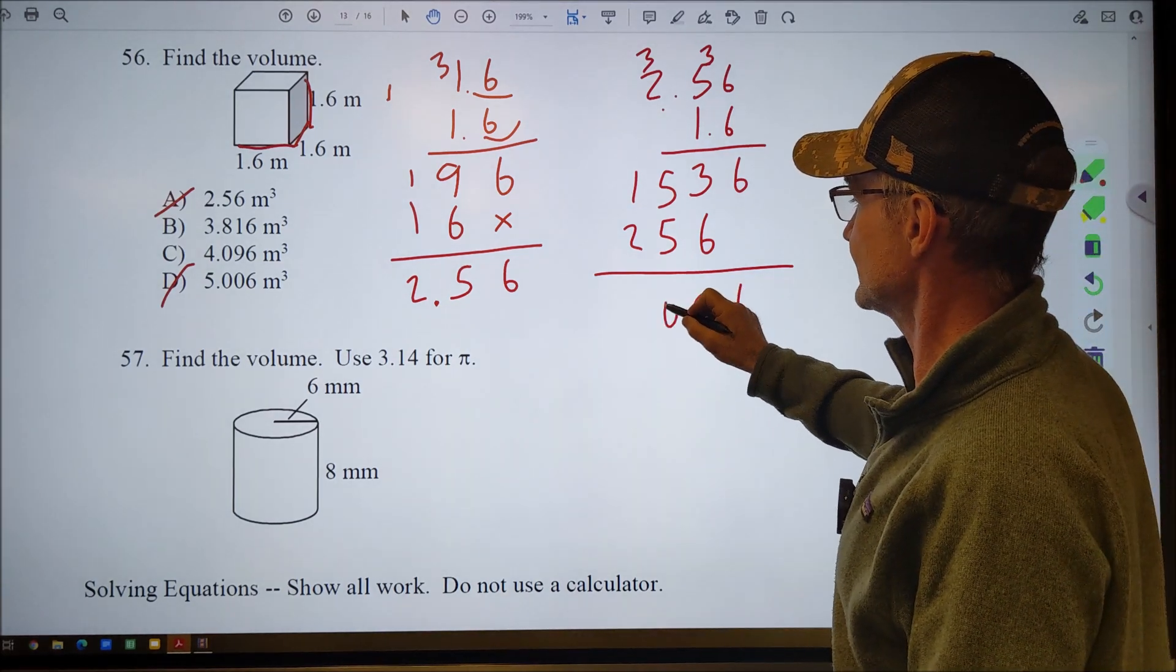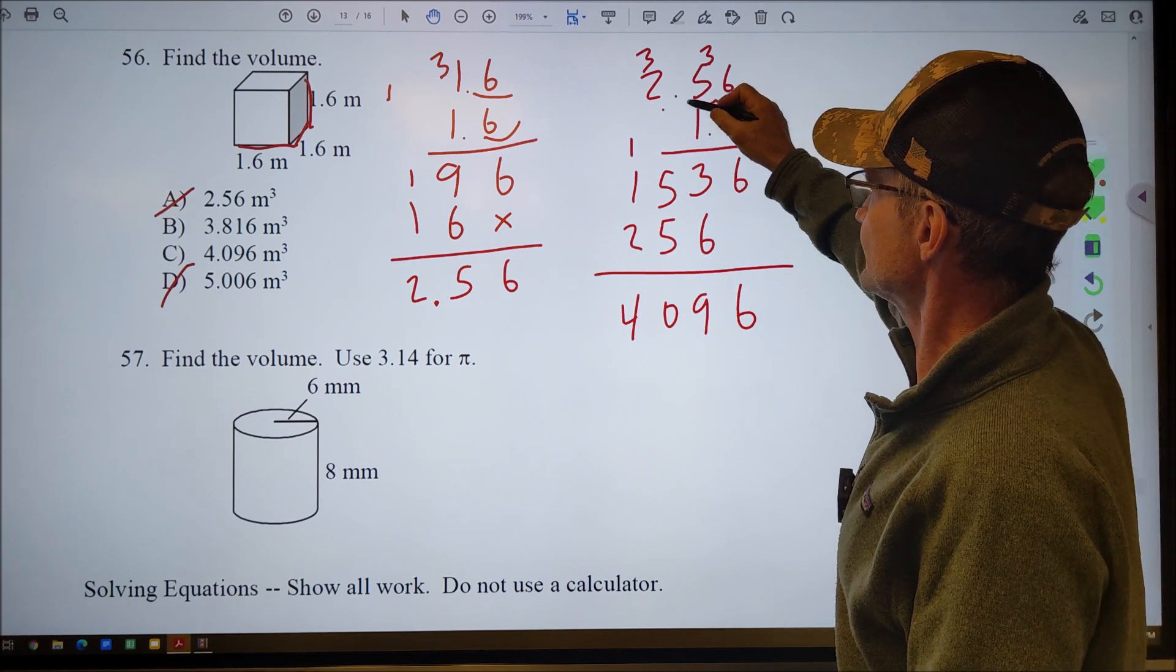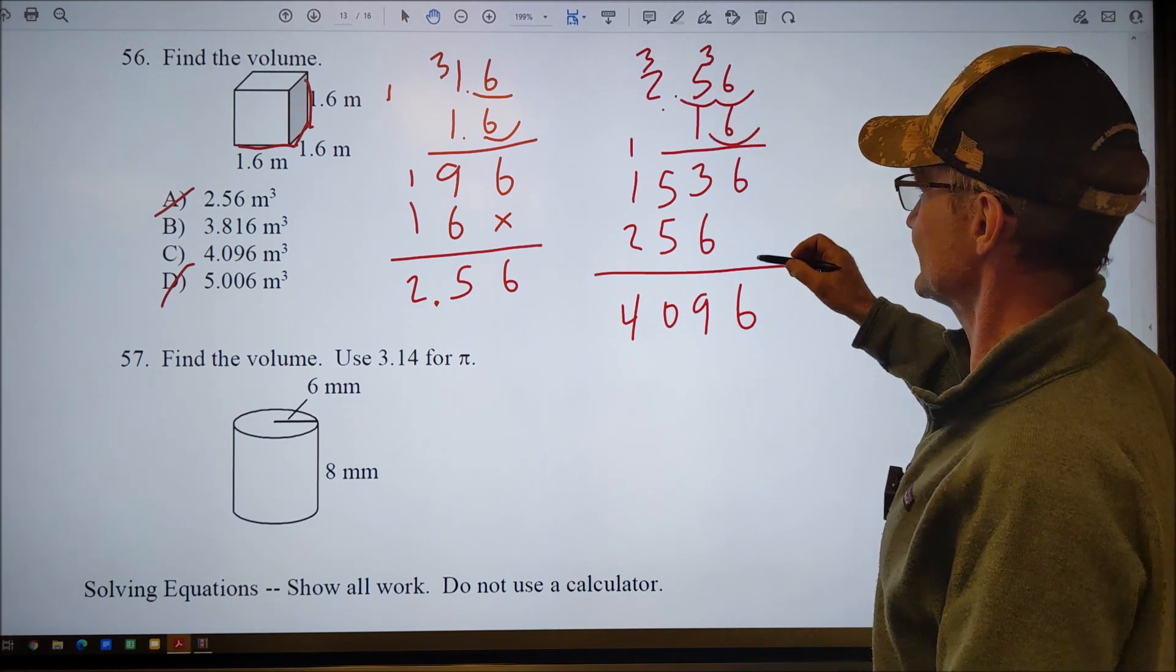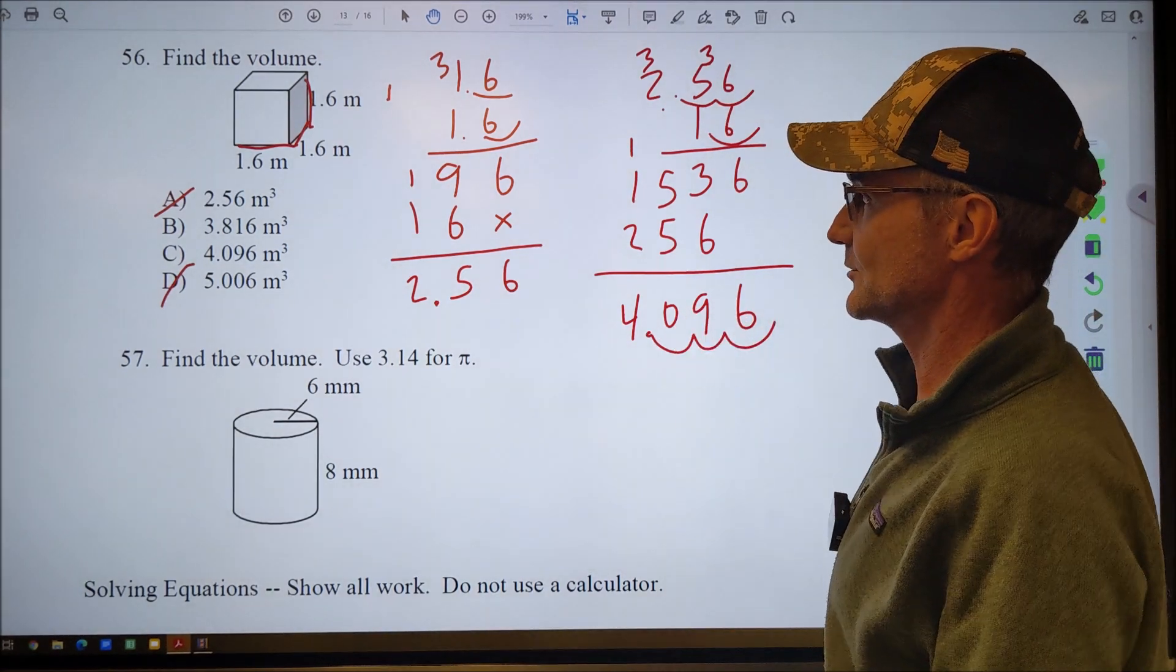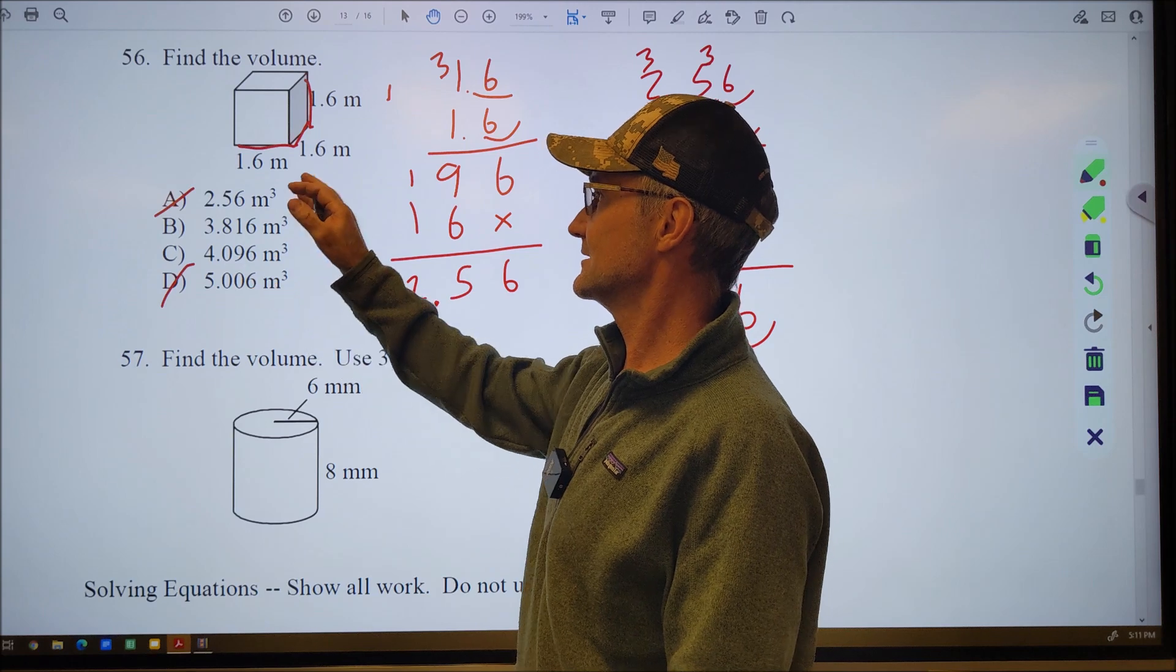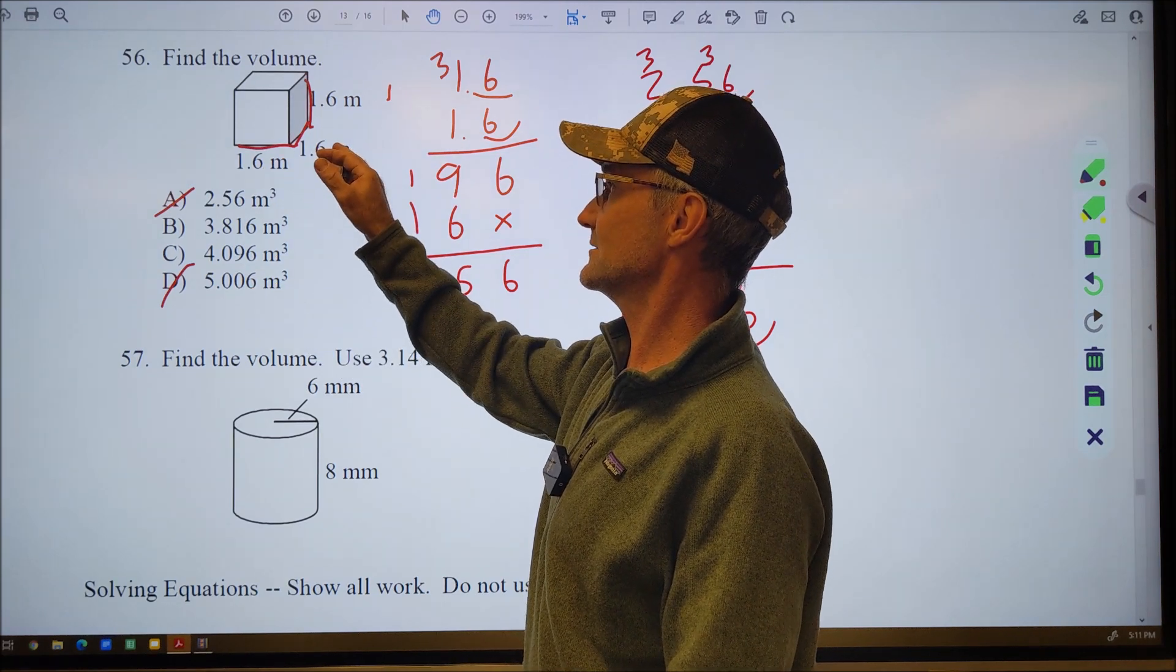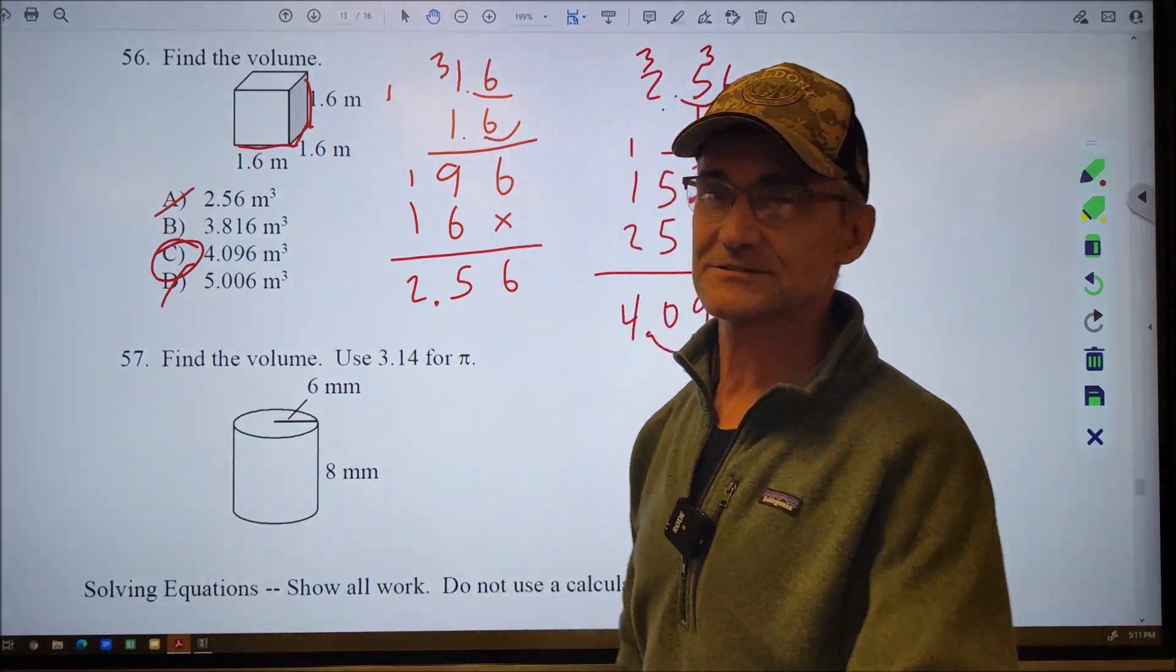Again, 36. Carry the 3, 33. Carry the 3, 12, 15. And then multiplying the 1, you get 6, 5, 2. Add down, you get 6, 9, 10. Carry the 1, you get 40. So I'm over 1, 2, 1. So that means I'm over 3 total places. 1, 2, 3, 4.096. Just going to double check my meters. My units is meters times meters, times meters, meters cubed. There's my correct answer, answer C.